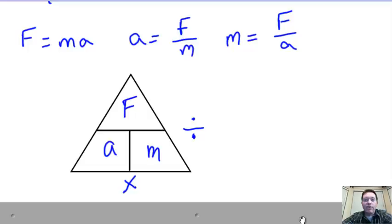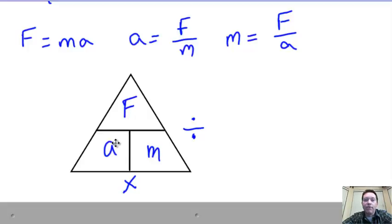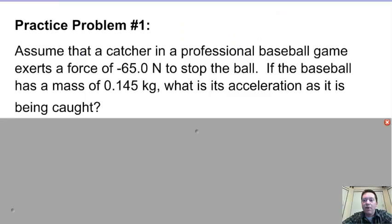Like when we talked about speed and velocity, there's one of these fancy triangles we can use for Newton's second law as well. If I want to solve for force, I cover it up and multiply acceleration times mass. To solve for acceleration, I cover it up — that's force divided by mass. To solve for mass, I cover it up and take force divided by acceleration.